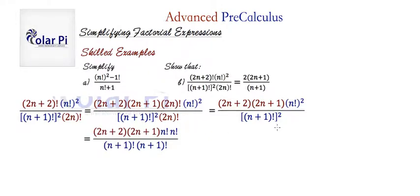All I've done here from the previous step is, I've interpreted n factorial squared as being n factorial times n factorial, which it is. And then (n plus 1) factorial squared is (n plus 1) factorial times (n plus 1) factorial.